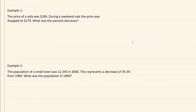Let's see how that works for example one. The price of a sofa was two hundred and ninety-nine dollars, and during the weekend sale the price was dropped to a hundred and seventy-nine dollars. What was the percent decrease? So we'll start with our initial amount, which is two ninety-nine, minus our final amount, which is a hundred and seventy-nine, all over our initial amount, two ninety-nine. We're looking for our percent, so that will be our x over a hundred.